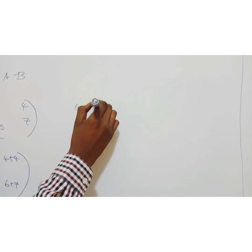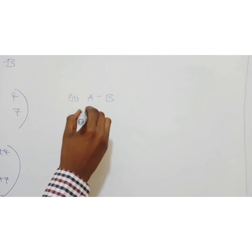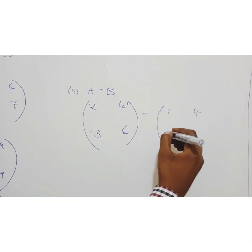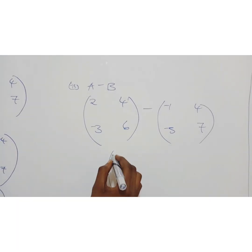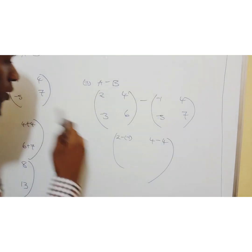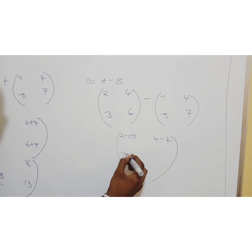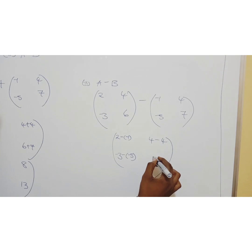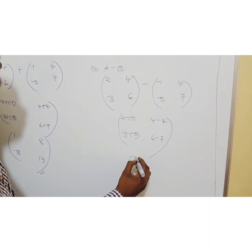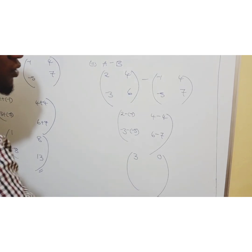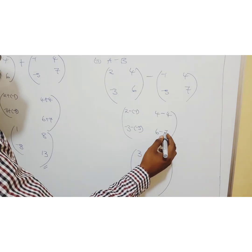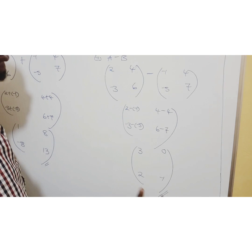Second question: A minus B. Same method, but we are subtracting. So we have 2 minus negative 1, 4 minus 4, negative 3 minus negative 5, and 6 minus 7. Negative times negative is positive, so 2 plus 1 is 3, 4 minus 4 is 0, negative 3 plus 5 is 2, and 6 minus 7 is negative 1. That's your answer.